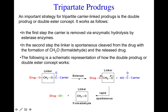An important strategy for tripartite carrier link products is the double prodrug, also known as the double ester concept. In the first step, the carrier is removed via enzymatic hydrolysis by the esterase enzyme - this happens in vivo in the human body. The esterase enzymes break the ester bond, leaving the drug still conjugated to the linker. In the second step, the linker is then spontaneously cleaved from the drug.